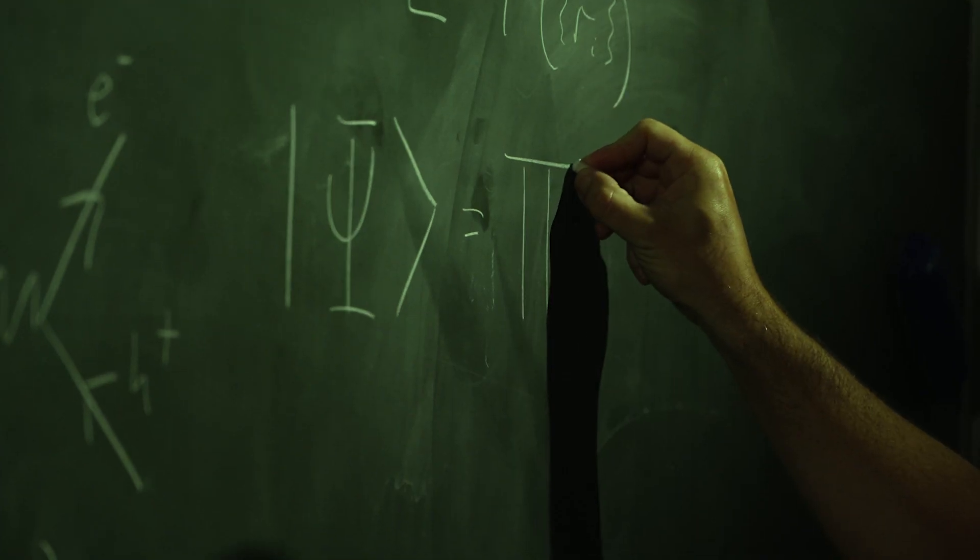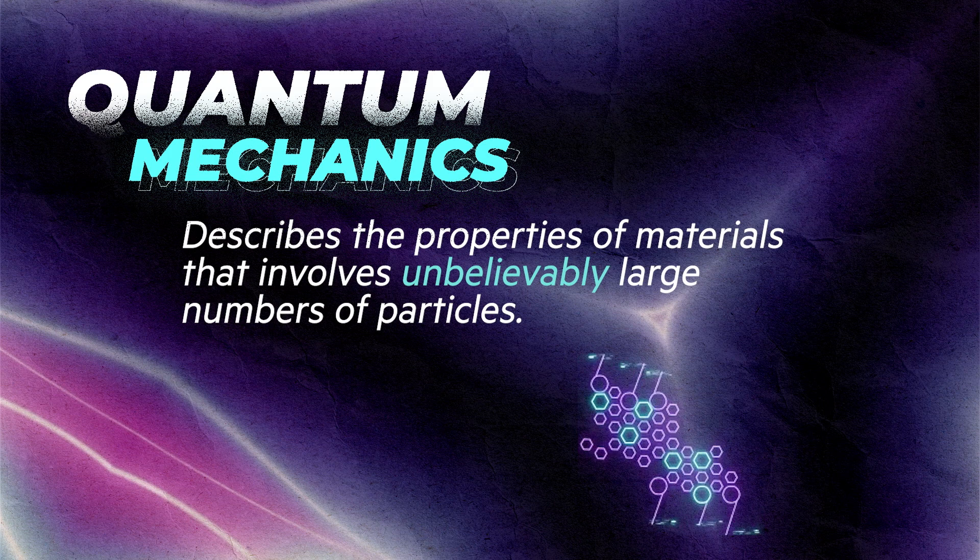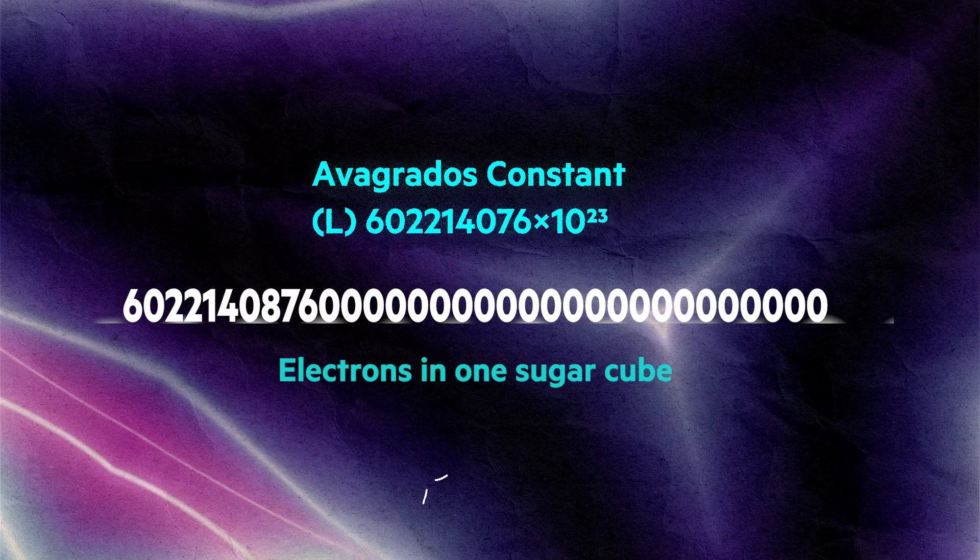In condensed matter physics, we use quantum mechanics to describe the properties of materials that involve unbelievably large numbers of particles. For example, in a sugar cube, you have Avogadro's number of electrons interacting with one another.